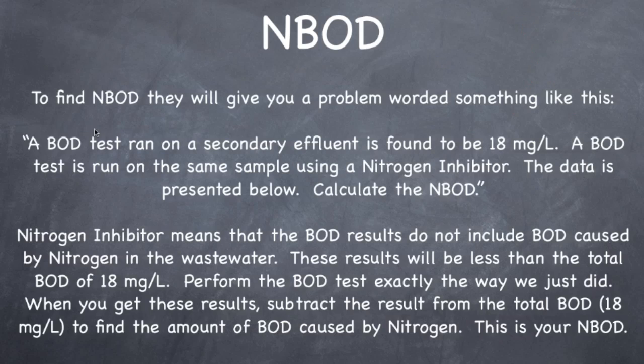Now, NBOD, nitrogenous BOD. To figure this out, to find the NBOD, they will give you a problem worded something like this. And this is how they would word it. A BOD test ran on a secondary effluent is found to be 18 milligrams per liter. So that's BOD test. That's the total BOD. A BOD test is run on the same sample using a nitrogen inhibitor. The data is presented below. And there would be data here that looks just like the data we did for BOD. And they want you to calculate the NBOD.